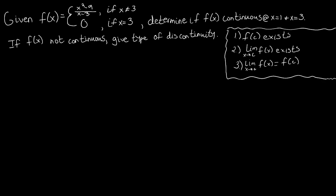So let's look at x equals 3 first. We're going to answer these three questions and see if we get that f of x is continuous at this point or not. So the first one we're going to ask ourselves, what is f of 3? By definition of the piecewise function, we see that if x is 3, f of x is 0.